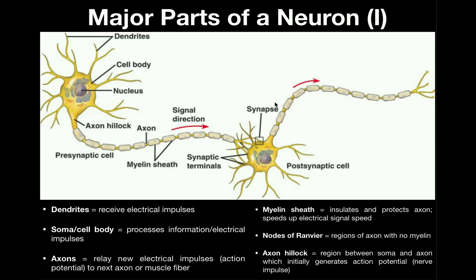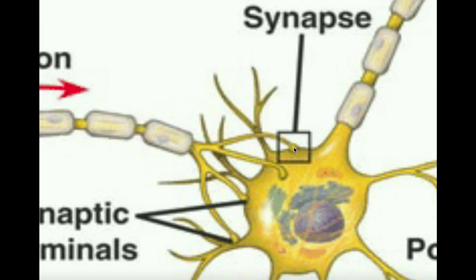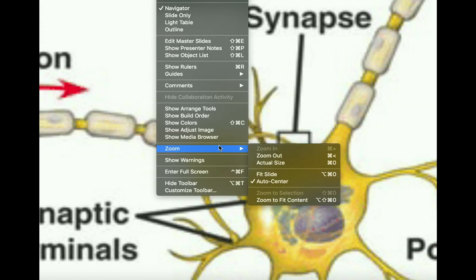The last thing I want to talk about is what's called a synapse. A synapse is basically an indirect connection between normally the axons of one neuron and the cell body or dendrites of a second neuron. We can see that one projection of the axon from the first neuron is actually connecting with the cell body or, in some cases, the dendrites of the second neuron. That indirect connection is called the synapse.